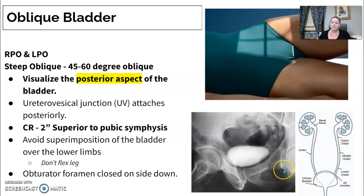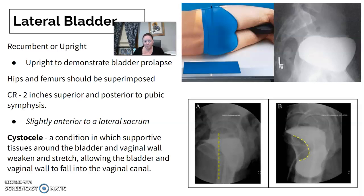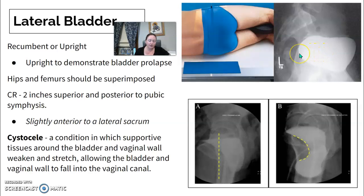We're centering in the same place. Make sure the patient's legs stay flat and don't flex, because you don't want the lower limbs to overlap. The obturator foramen on the side down will be closed. The lateral bladder can be done recumbent or upright and is used to demonstrate bladder prolapse or position of the bladder. The central ray is two inches above the pubic symphysis and two inches posterior as well — think just anterior to the sacrum/coccyx or inferior to L5-S1.